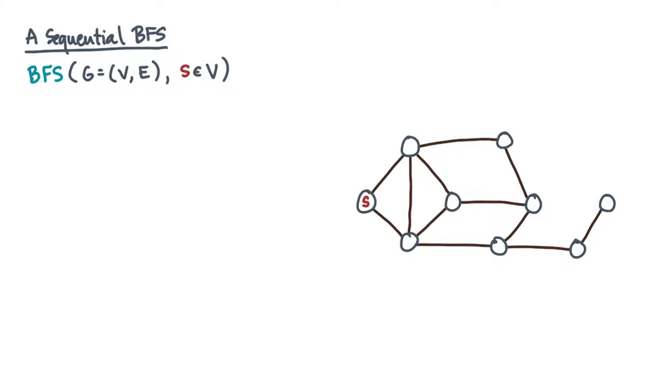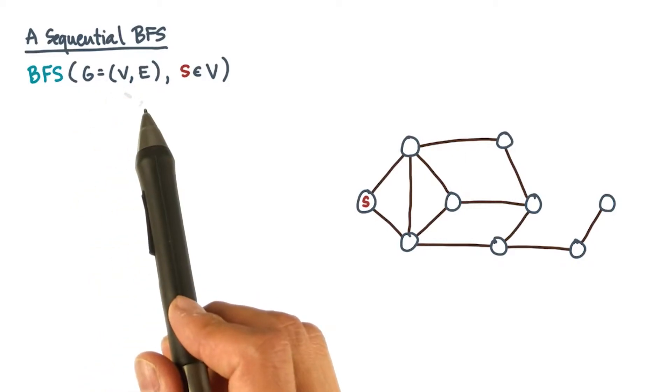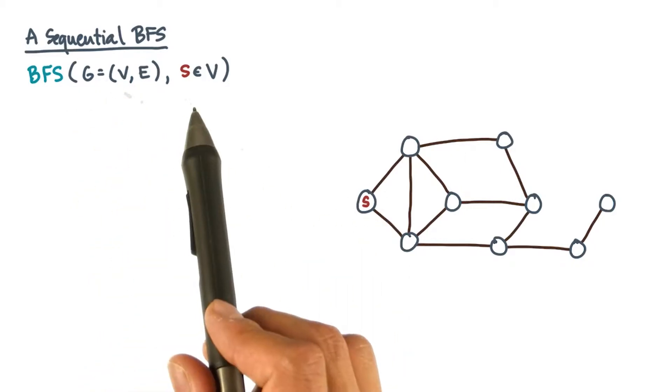Let's write down some pseudocode for a sequential BFS algorithm. This algorithm would take as input a graph g, represented by its vertices and edges, as well as a source vertex s.